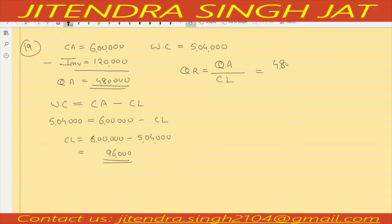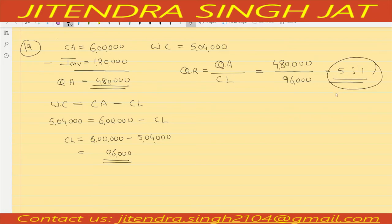Quick assets are 4 lakh 80,000 and current liability we have computed as 96,000. Dividing 4,80,000 by 96,000 gives us 5 times. So quick ratio is 5 is to 1. I hope that is clear to everyone.